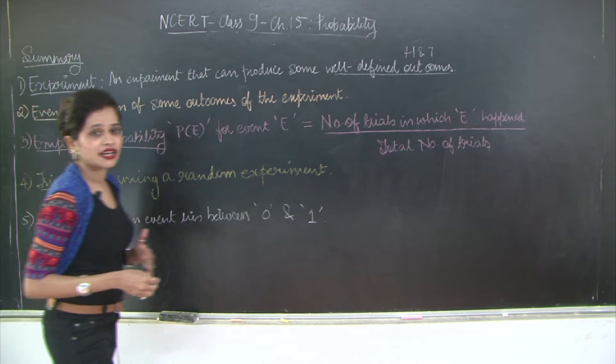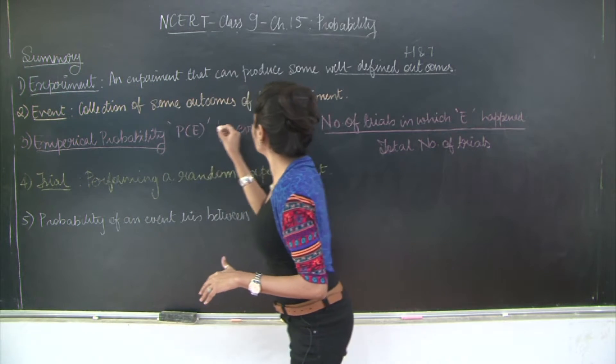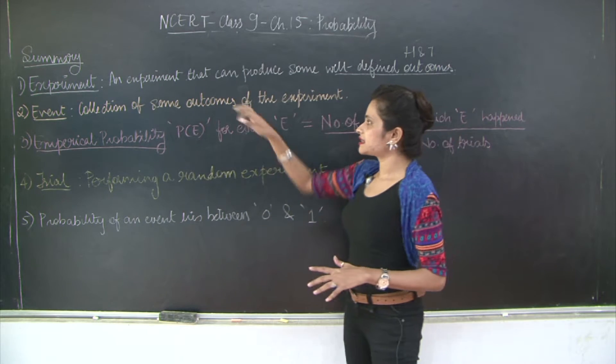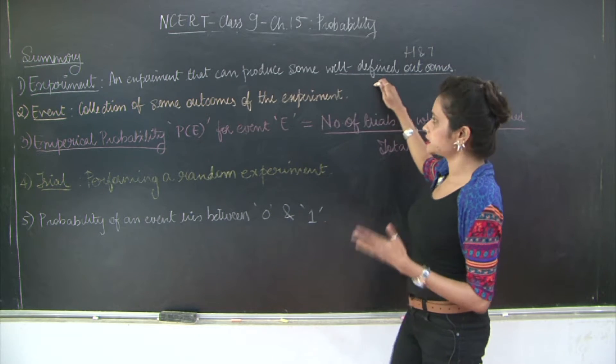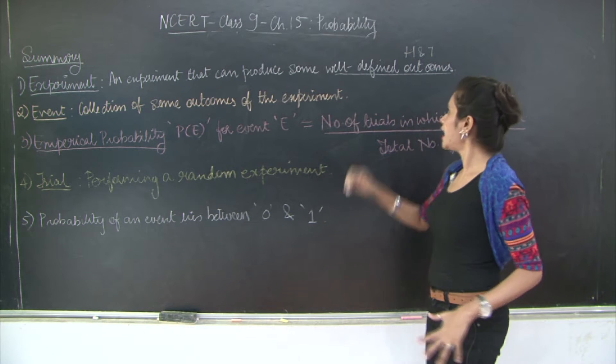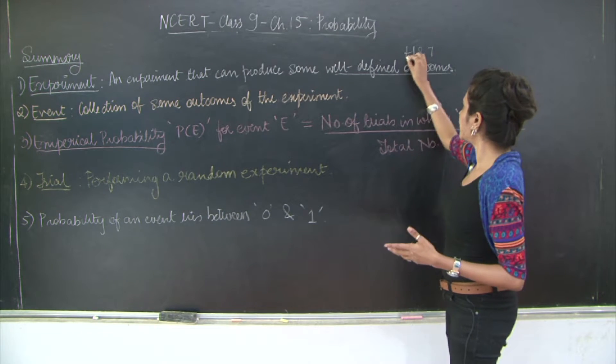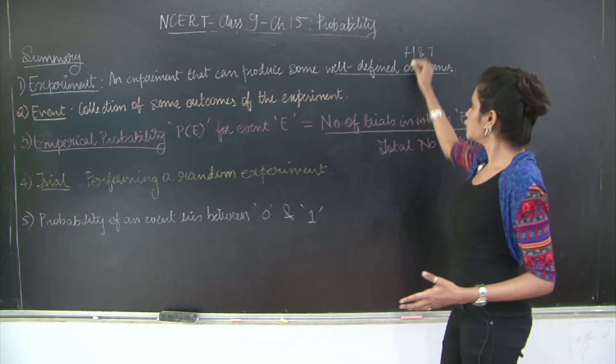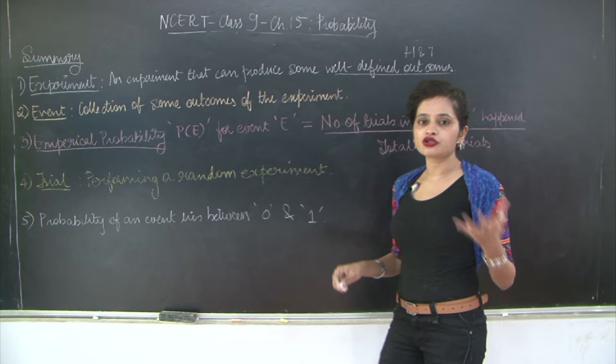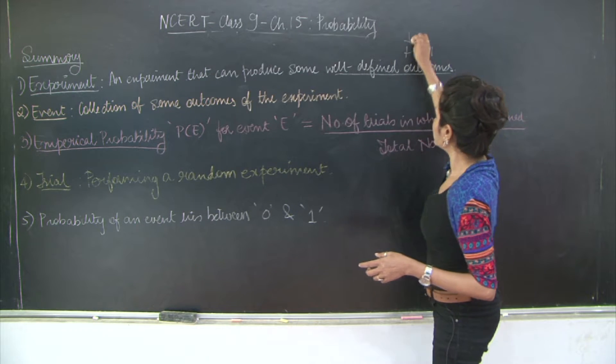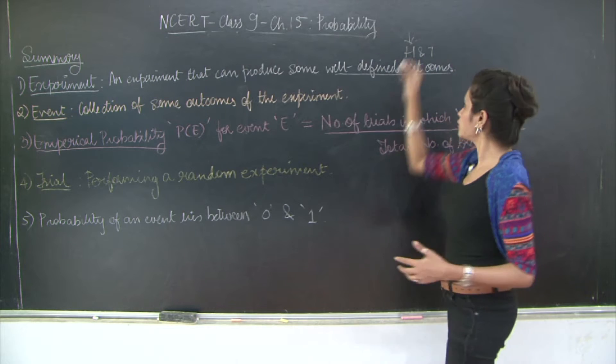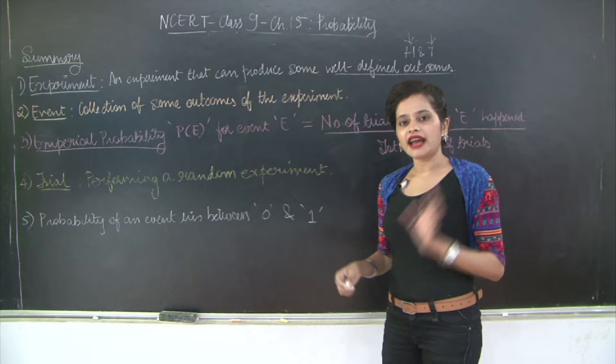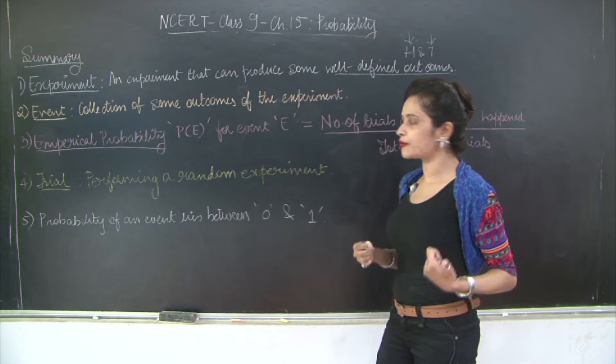Then moving on to event. Event is the collection of outcomes of the experiment, some outcomes of the experiment. So let's say I have performed an experiment where I have tossed a coin and I'm going to collect either heads or tails. So whatever value you're collecting, that is going to be an event. So if you say I'm going to make a count of heads, then your event will be heads. If you're going to take a count of tails, then your event is going to be tails. So it's nothing but an outcome that you select from an experiment that is performed.